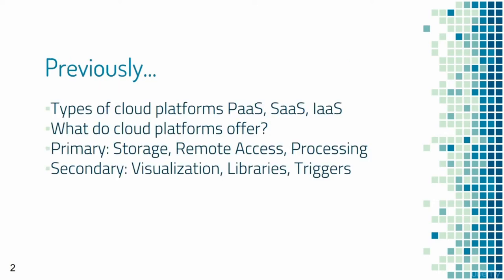To recap: we looked at the different types of cloud services including Platform as a Service, Software as a Service, and Infrastructure as a Service. We discussed what functionality each offers and how they can be used in the IoT context. Cloud platforms primarily offer storage, remote access to data, an application framework for data processing, visualization, libraries, and data triggers.